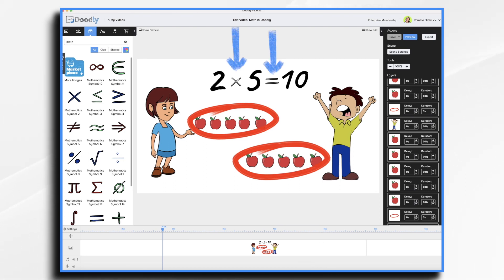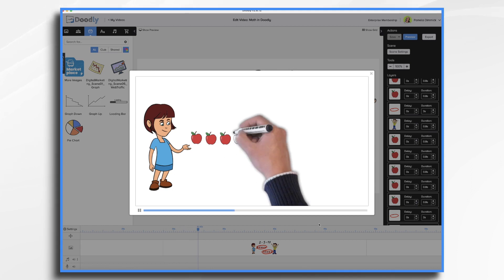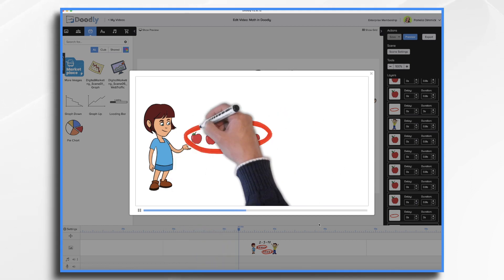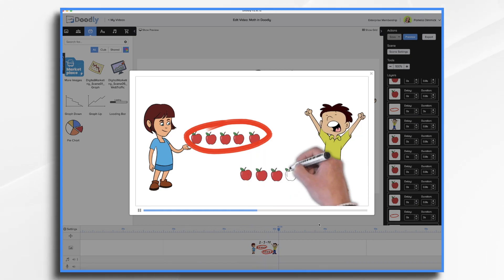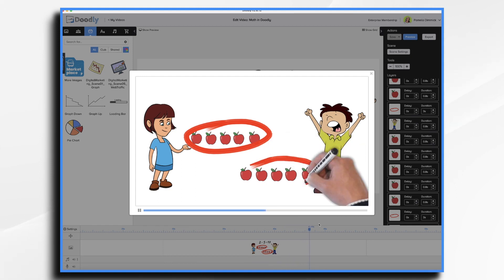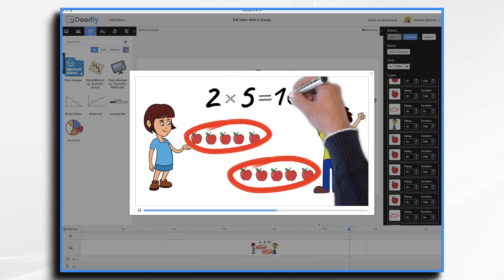You'll see here that I've created a simple equation using text and some of these math symbols. In this example, we're illustrating a fairly simple math problem. Ann has five apples. Ethan has five apples. So we have two groups of five, right? Thus, two times five equals ten.